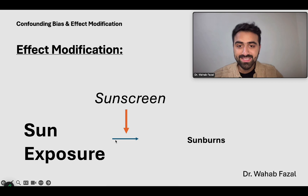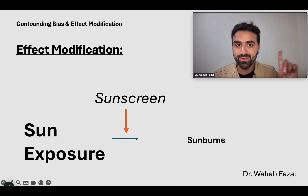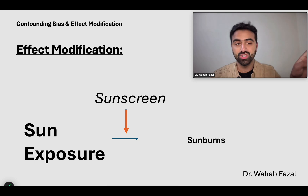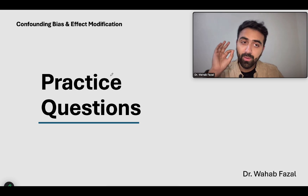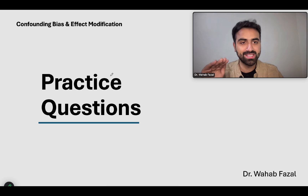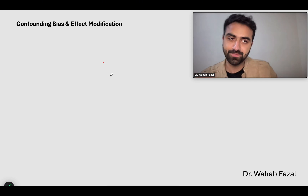So what's the difference between confounding and effect modification? Well, in the sunscreen example, the sun exposure was in fact leading to sunburns — which was not the case in confounding, where the outcome and the exposure were not truly related to each other. Now I have two practice questions for you which will test these concepts, and both have two hidden concepts the way your examiner will ask them.